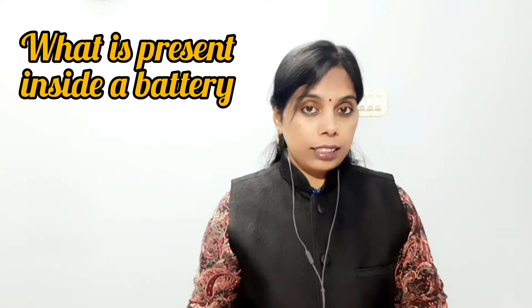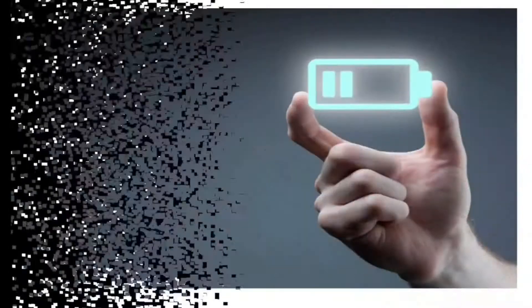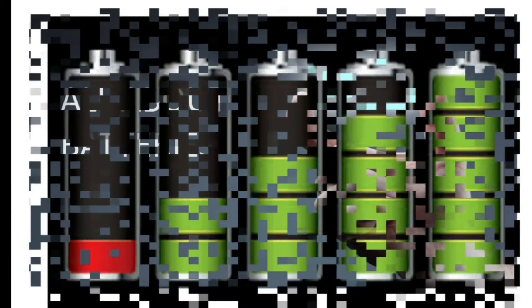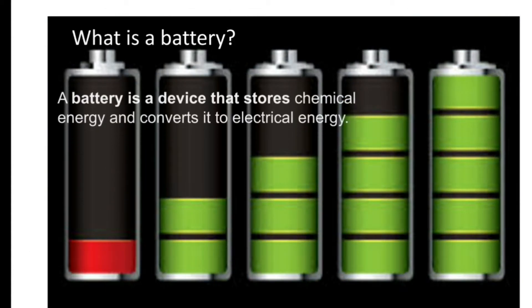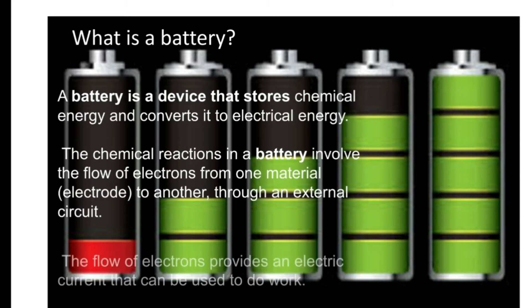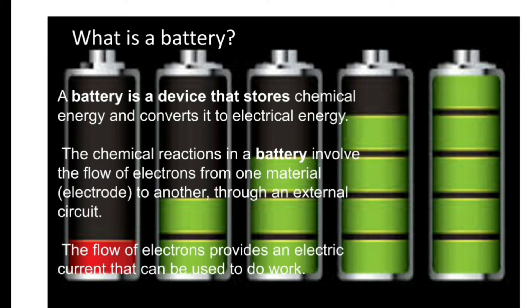Because of that I thought I'd just open it and see what is present inside. I'm going to show you what is present inside this type of battery and the battery in our mobile phone — I have opened both. Here we are going to know some fundamental properties of a battery. A battery is a device that stores chemical energy and converts it into electrical energy. The chemical reactions involve the flow of electrons from one electrode to another through an external circuit, providing an electric current that can be used to do work.